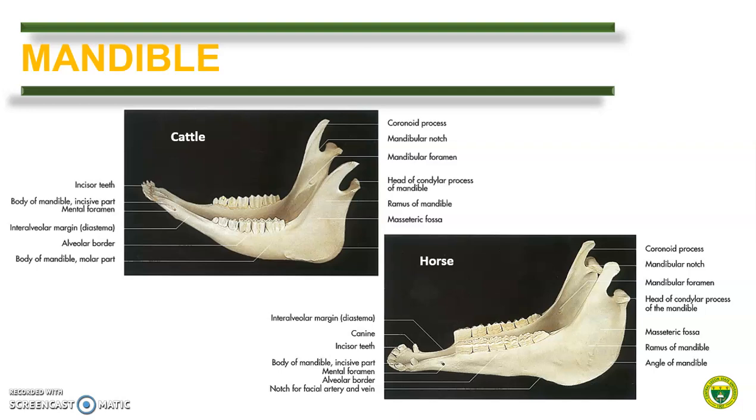Then we compare the mandible of larger animals — this time from cattle and from a horse. At first we cannot discern the difference between the two. However, we can use some anatomical differences to differentiate them. Horses have canine teeth, in contrast to ruminants that lack these teeth. If we look closely at the condyloid processes, the condyloid process of cattle has a concave appearance while it is convex-like in the horse.